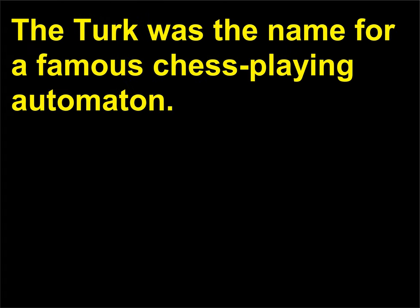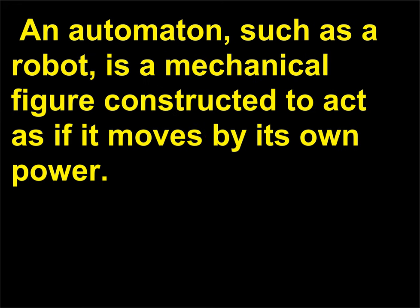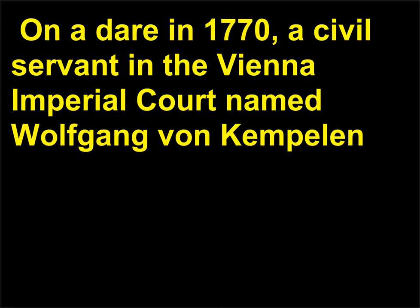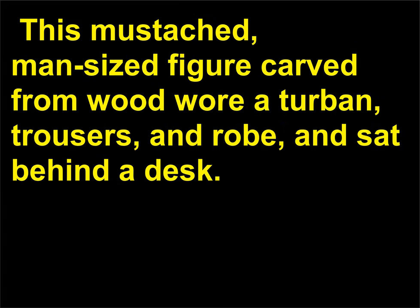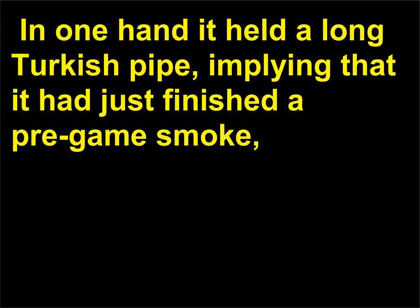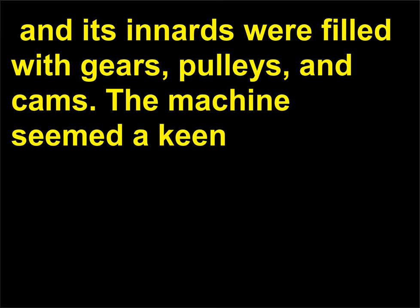What was the Turk? The Turk was the name for a famous chess-playing automaton — a mechanical figure constructed to act as if it moves by its own power. On a dare in 1770, a civil servant in the Vienna Imperial Court named Wolfgang von Kempelen (1734–1804) created a chess-playing machine. This mustachioed, man-sized figure carved from wood wore a turban, trousers, and robe, and sat behind a desk. In one hand it held a long Turkish pipe, implying that it had just finished a pre-game smoke, and its innards were filled with gears, pulleys, and cams.